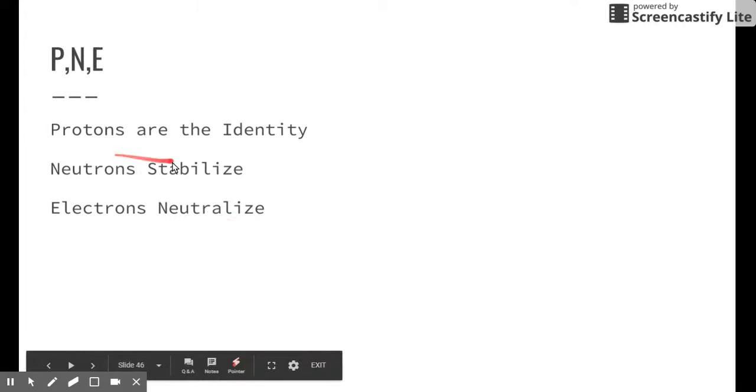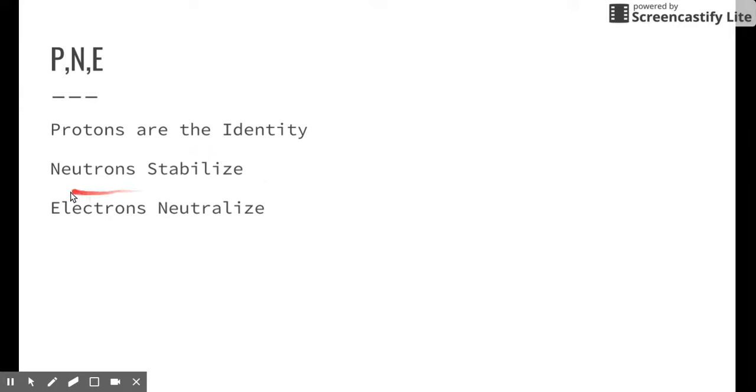Now we've talked about a few of these things before. Protons represent the identity, and now we know that neutrons stabilize the atom. The stabilizing agent of an atom is the neutrons. Now electrons don't stabilize the atom, they neutralize the atom. So protons are identity. Neutrons stabilize the nucleus. Electrons neutralize them, i.e. they cancel the charge out. And we will talk more about electrons on a different day.